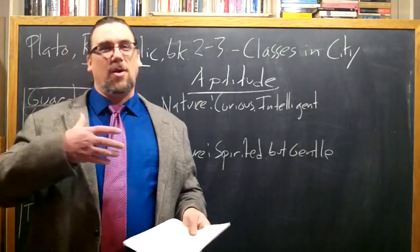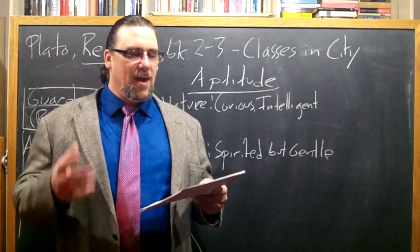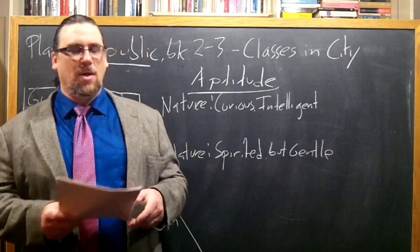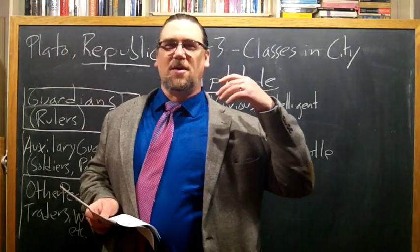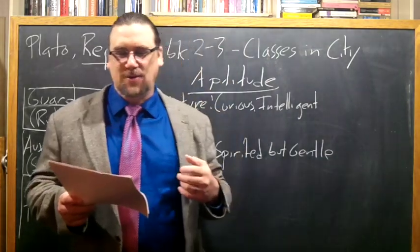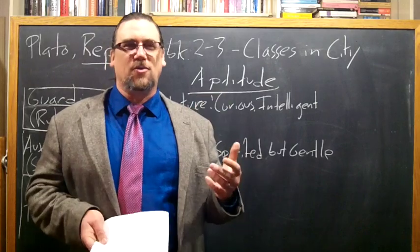And here he's going to actually start talking more about the higher guardians. He says, and he's joking around here, the trait that I'm looking for is actually found in the dog. Why? Because the dog is going by making everything depend on knowledge. When a dog sees a stranger, he is angry, but when he sees an acquaintance, he welcomes him. Why is this? Well, because it depends on knowledge. He knows the person that he likes, he doesn't know the stranger. And so he says, surely this instinct of the dog is very charming. Your dog is a true philosopher. Now Plato doesn't believe that for a minute. Dogs are not philosophers, but he's making a metaphor here.